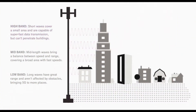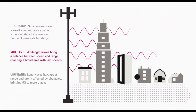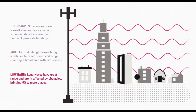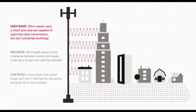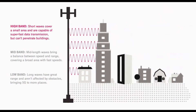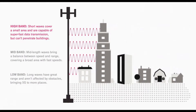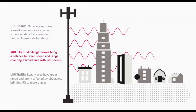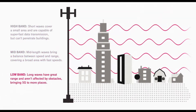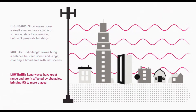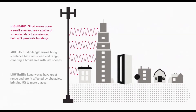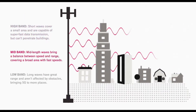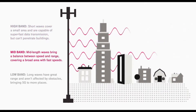Here is a GIF image from T-Mobile's website which briefly describes the three types of 5G. High band gives the fastest speeds but worst coverage. Low band gives the lowest speeds but best coverage, and mid band is a compromise between the other two.